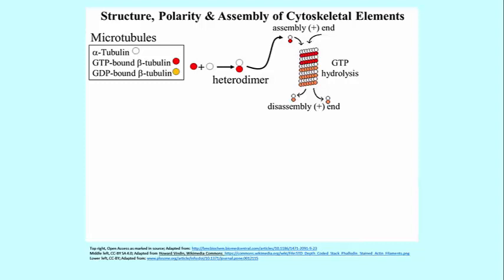Microtubules have polarity — a plus end and a minus end. The plus end is where heterodimers come together to make a microtubule, and the minus end is where the microtubule comes apart, where heterodimers come off. There's a difference in color between heterodimers adding to and those coming off the microtubule, because soon after several rows of heterodimers are established, the GTP is hydrolyzed. So most of the length of the microtubule consists of alpha-GDP-beta tubulin heterodimers.